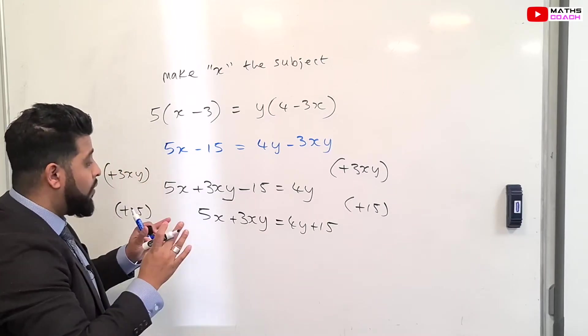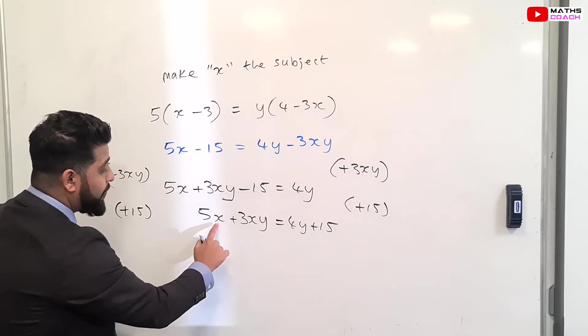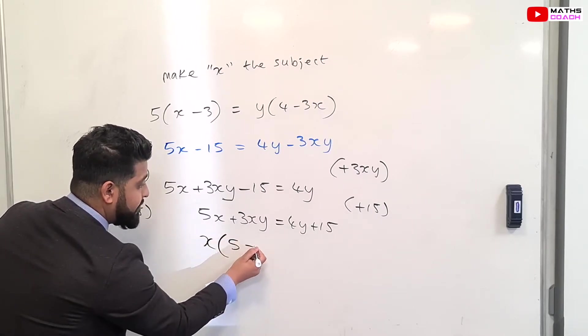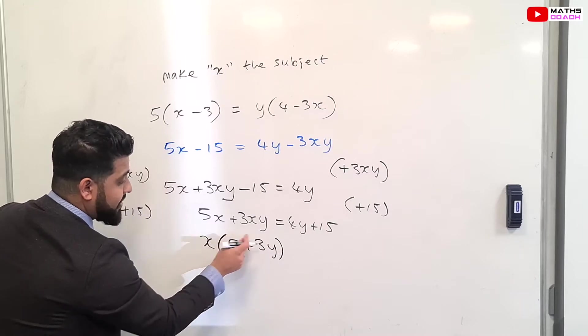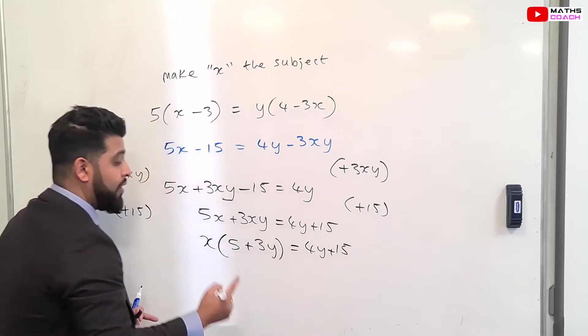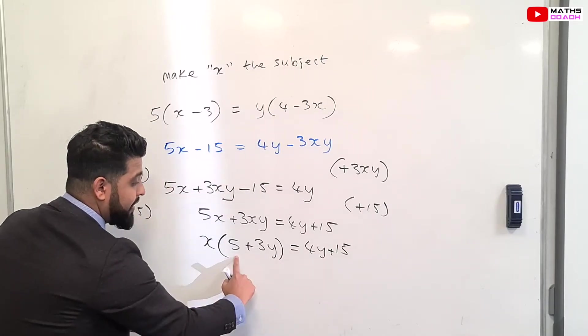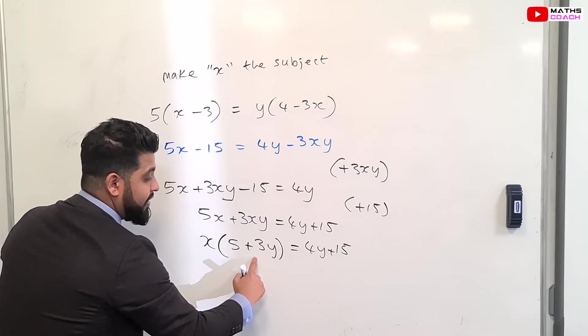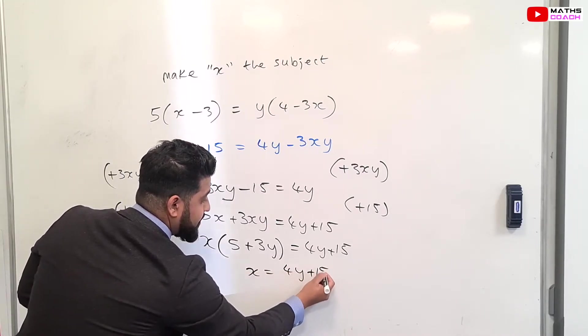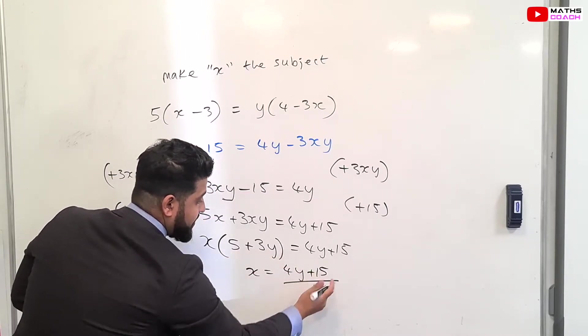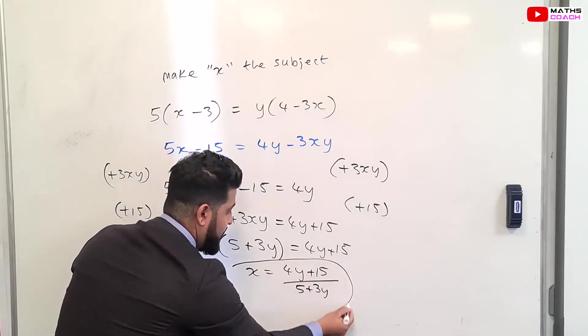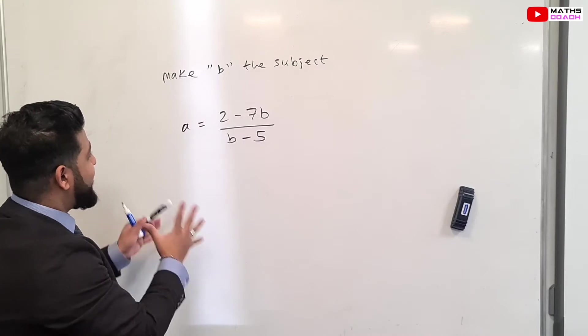I'm almost there. What I need to do now is to factorize the X out. So X bracket 5 plus 3Y. You see when you expand this you will get that, and on this side 4Y plus 15 remains. One final step. I want to get rid of this bracket. So I'm going to divide both sides by this bracket. So I have X is equal to 4Y plus 15 divided by 5 plus 3Y. And there you have it, X is now your subject.